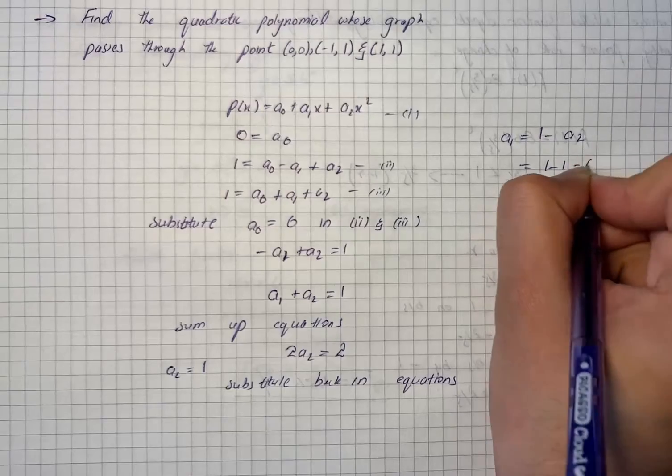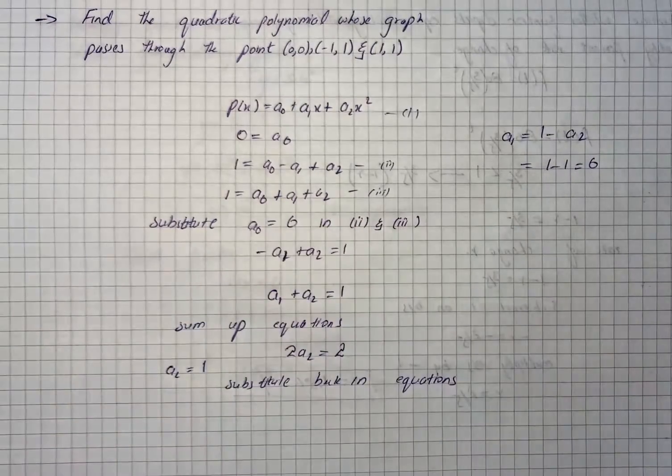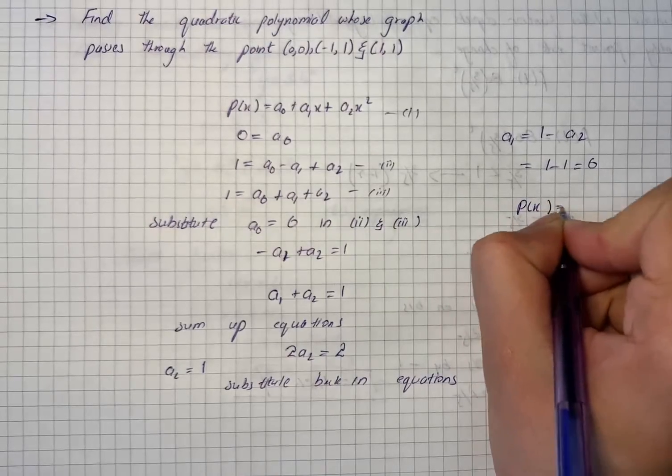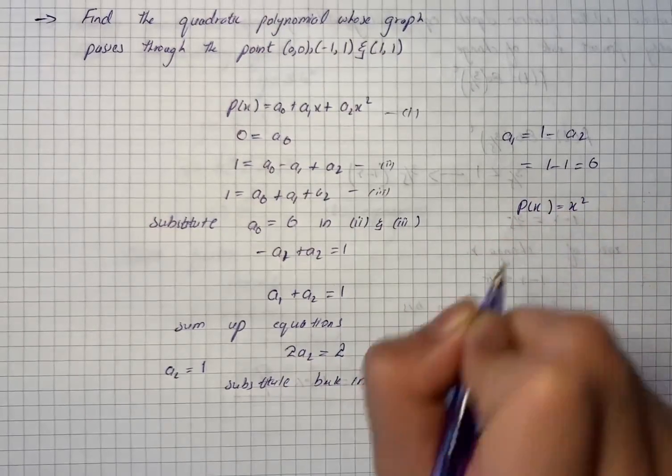And then it becomes 1 minus 1, that is equal to 0. Therefore, the interpolating polynomial is p(x) equals x^2. That is our solution for the given question.